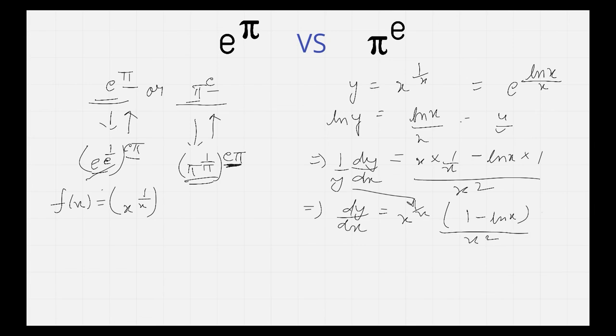This will only be equal to 0 when this part is equal to 0. That means 1 minus ln x equals to 0. This gives us x equals to e.